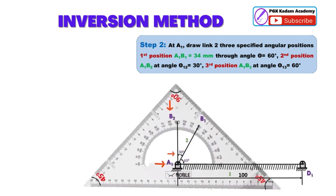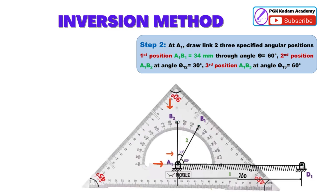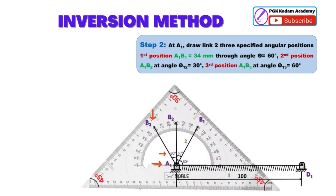Second position: A1B2 at angle theta 12 equal to 30 degrees. Third position: A1B3 at angle theta 13 equal to 60 degrees.